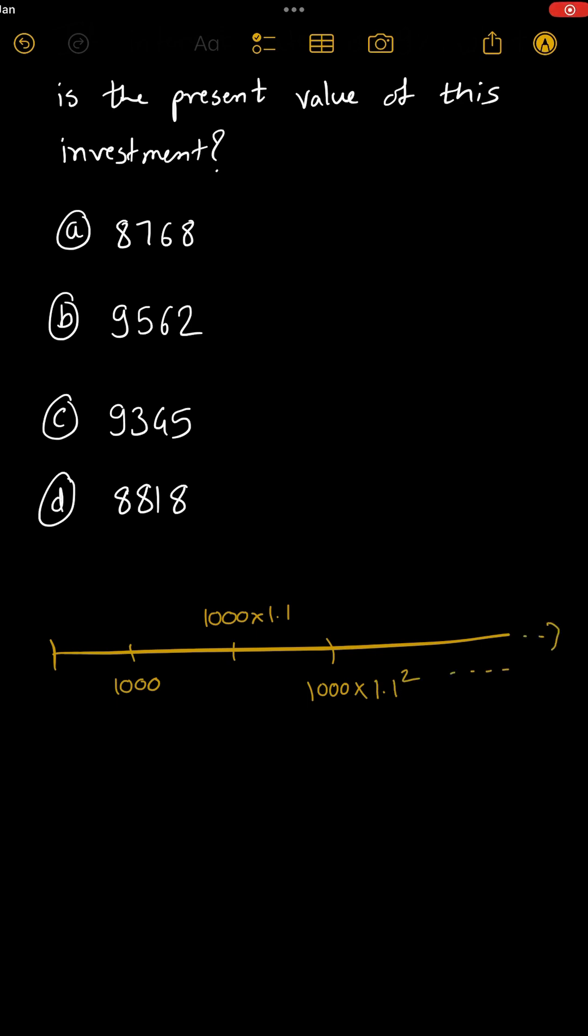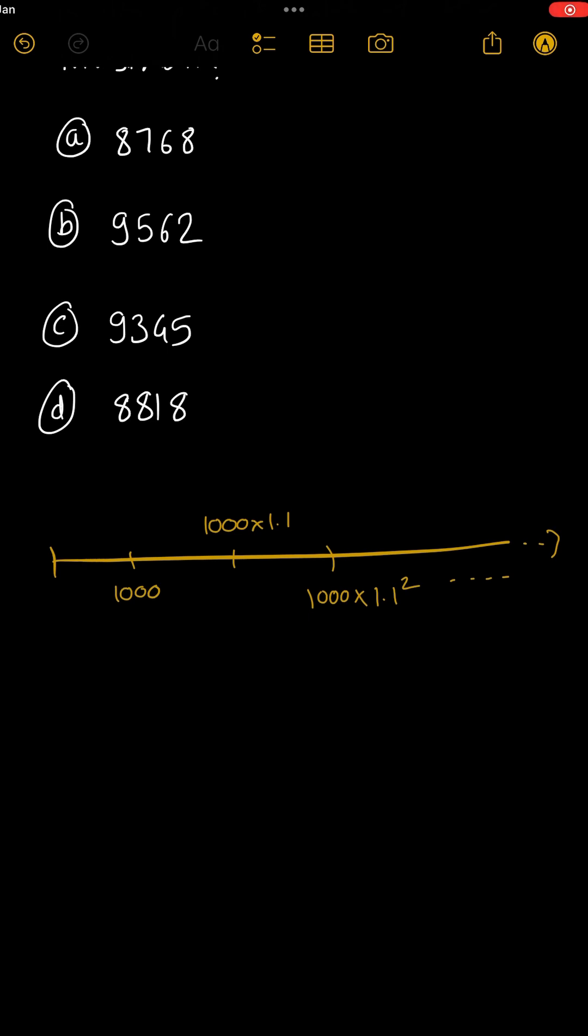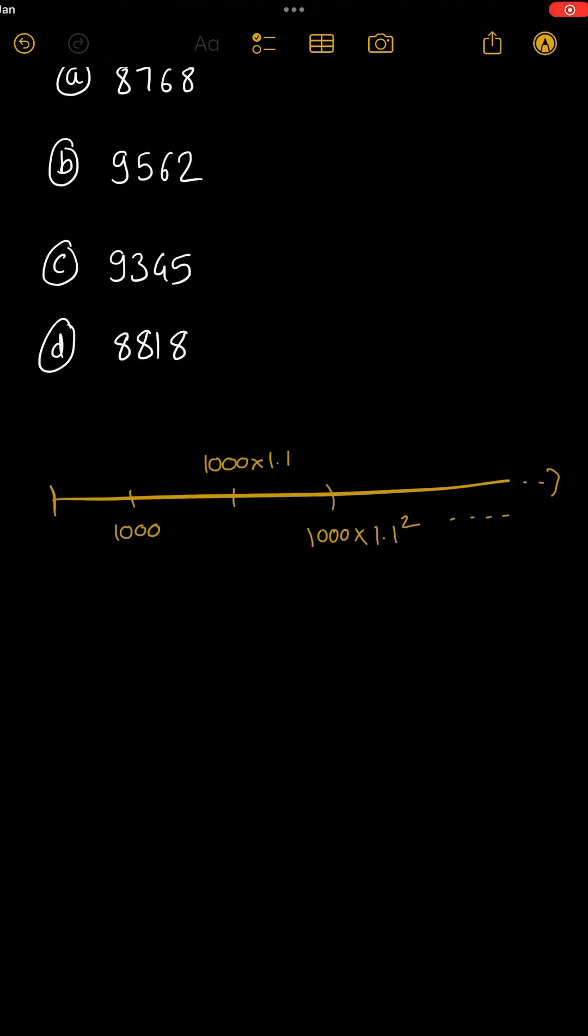To find present value of this, there is a formula for growing annuity, but you do not need it. You can use GP for this. How? You have to find present value of this, then this, then this, and so on, and add all the present values.